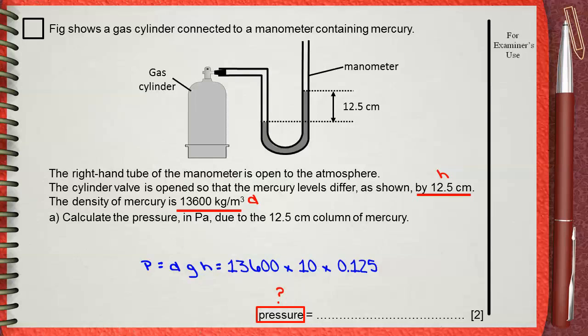So your height must be in the standard unit which is meters not centimeters. That's why the 12.5 will be divided by 100 to be converted into meters. This will give 0.125.